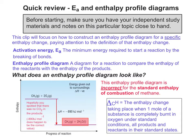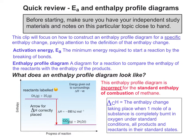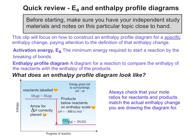Hopefully you've spotted that there was no CO2 in the products. You wouldn't have to memorise this, but minus 890 kJ mol⁻¹ does actually happen to be the correct value for delta Hc, the standard enthalpy combustion of methane. So all we had to do was put in CO2 — a fairly simple and straightforward change. The arrow for delta H is correctly placed and the products are below the reactants on the enthalpy scale. Always check that your mole ratios for reactants and products match the actual enthalpy change you're drawing the diagram for.